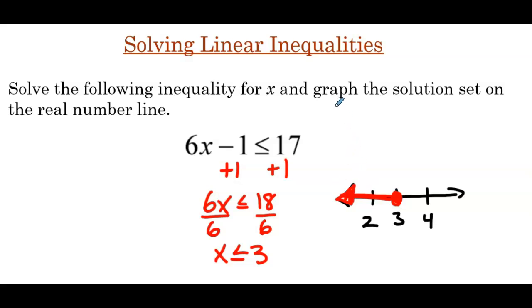Let's talk about a few differences. If this was an equation, we would have equals 3 and only have one solution. Now with an inequality, we have an infinite number of solutions — they just have to be values that are less than or equal to 3 on the number line.